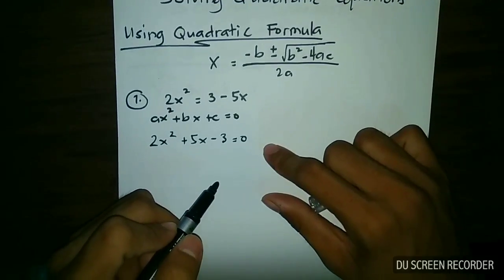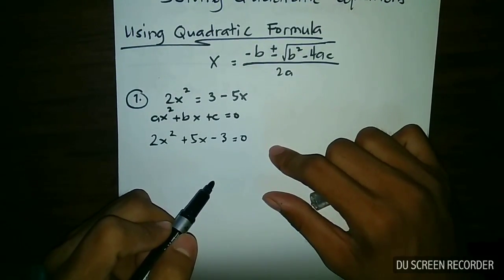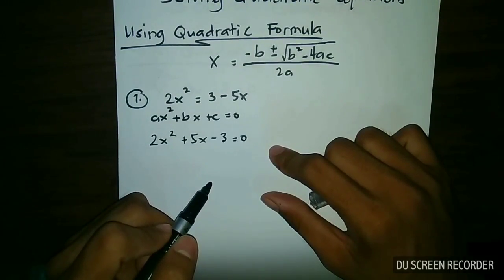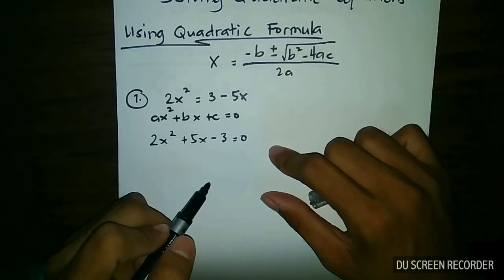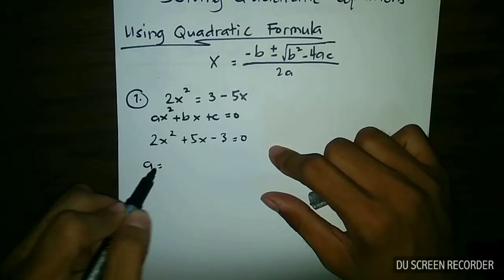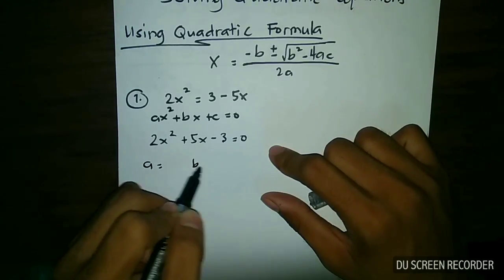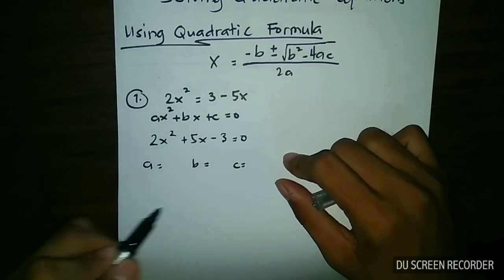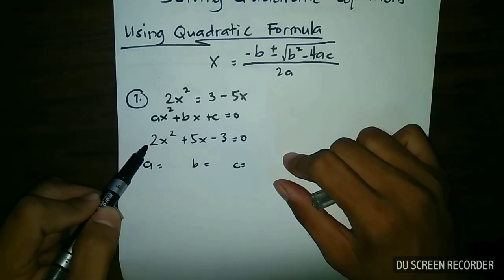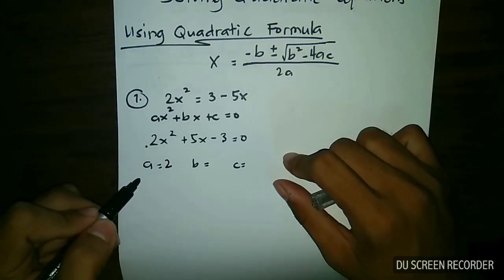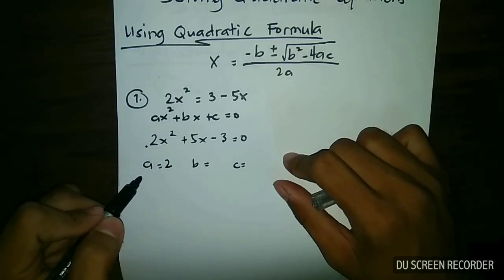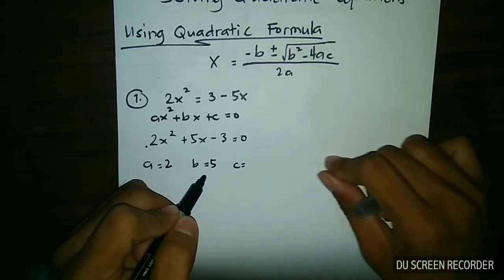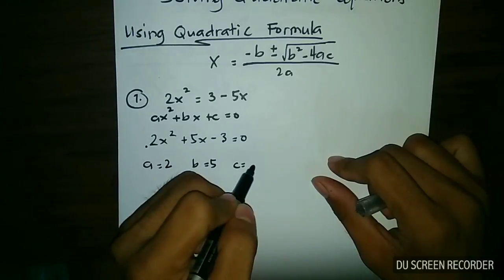Since you have already transformed this equation into standard form, you need to find the value of a, b, and c. From this equation, the value of a is equal to 2, the value of b is equal to 5, and the value of c is equal to negative 3.